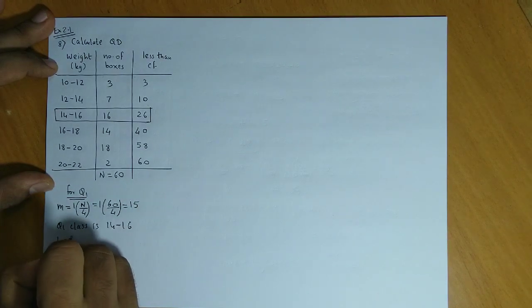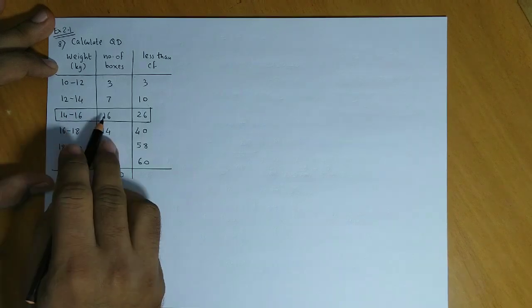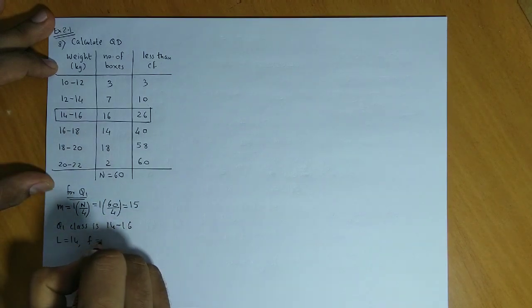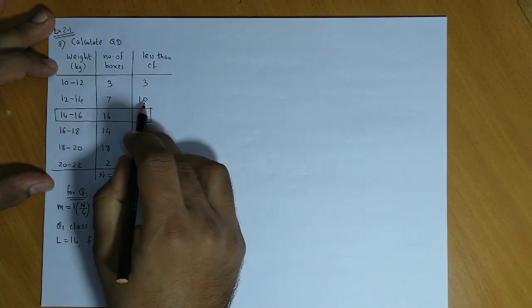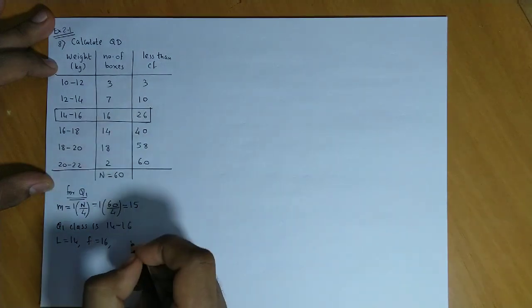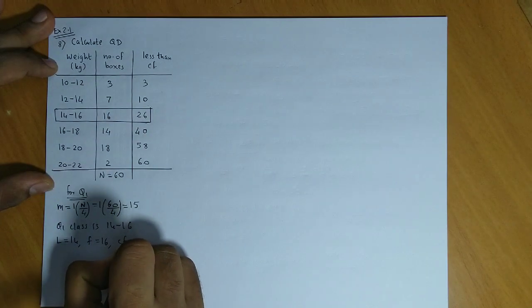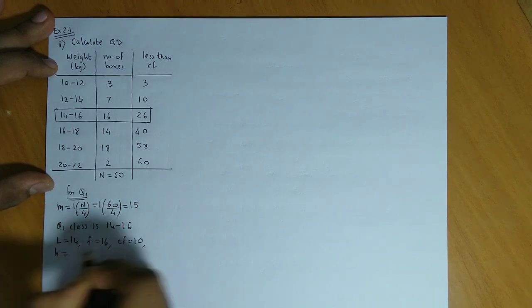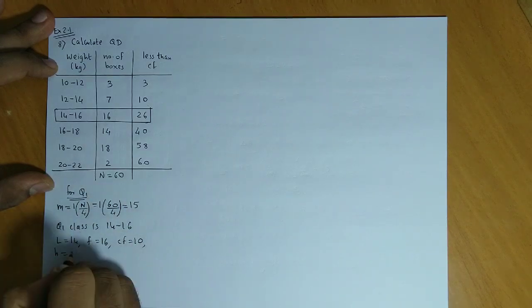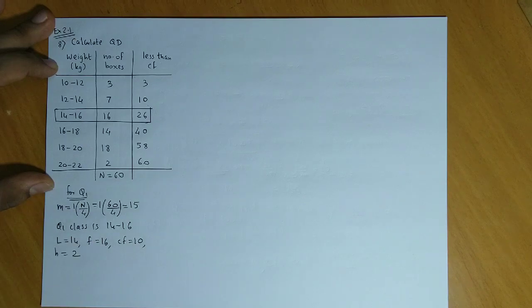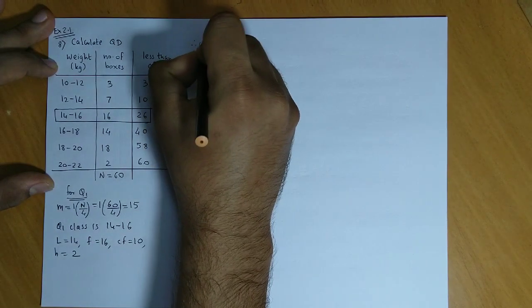For the Q1 class 14 to 16: lower limit is 14, frequency of this class is 16, CF of the previous class is 10, and height is 2.